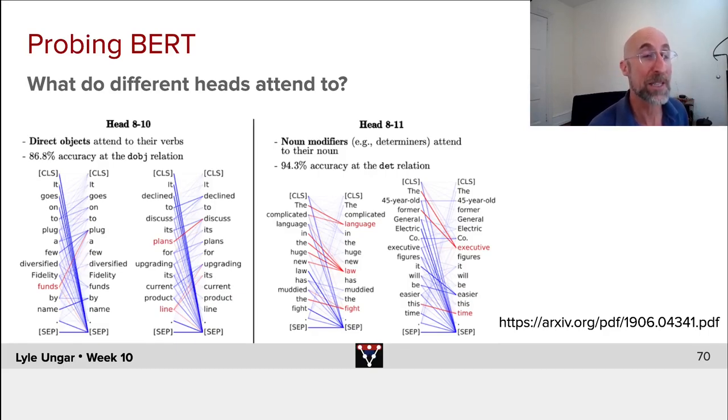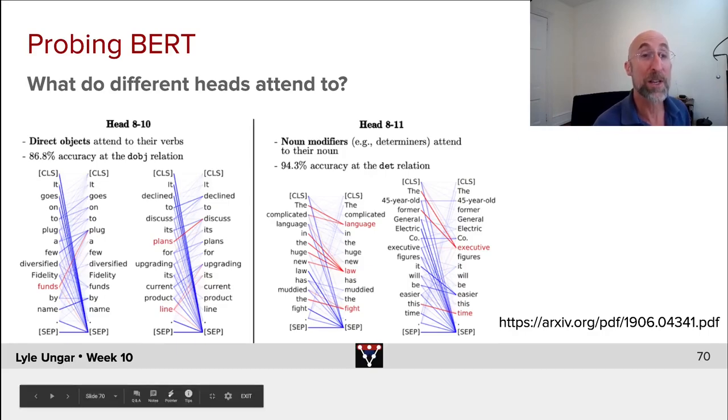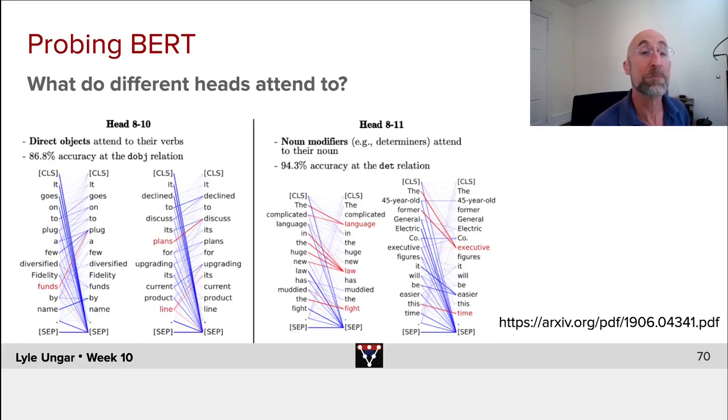You can see the attachments here of the objects and their verbs being learned by these heads. These two different heads learn different things. Similarly, looking at the red on the right-hand side, at levels 8 through 11, fairly deep in. The complicated language. In the huge new law. The fight. In each case here, each of these words is being matched up with, it's attending to the words that modify it. The former executive. This time.